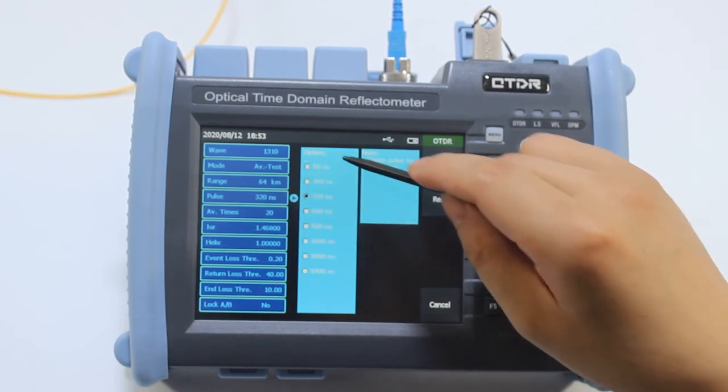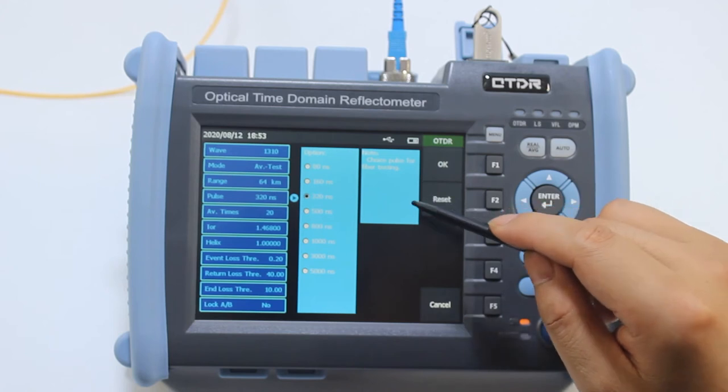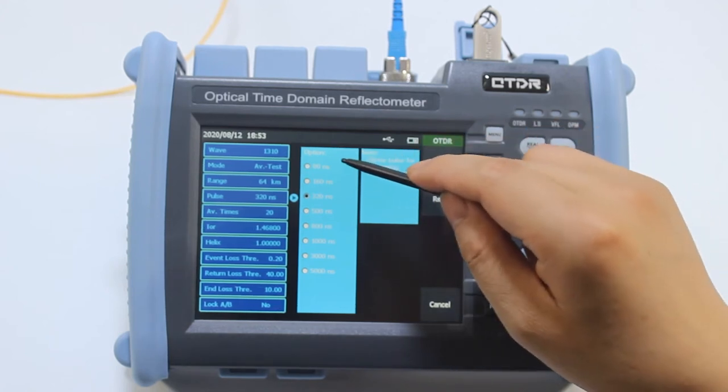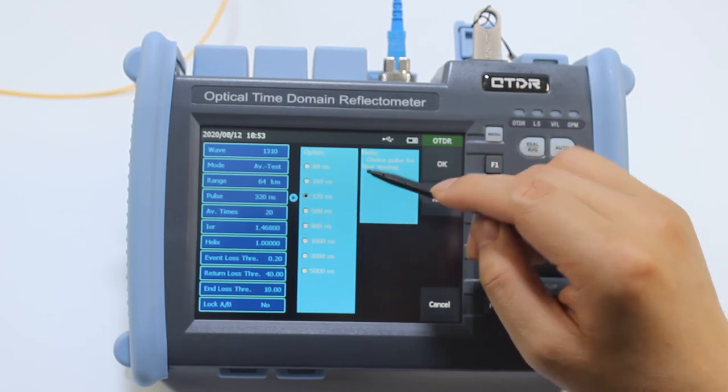Pulse. For short distance, we select narrow pulse width. For example, 160 nanoseconds.